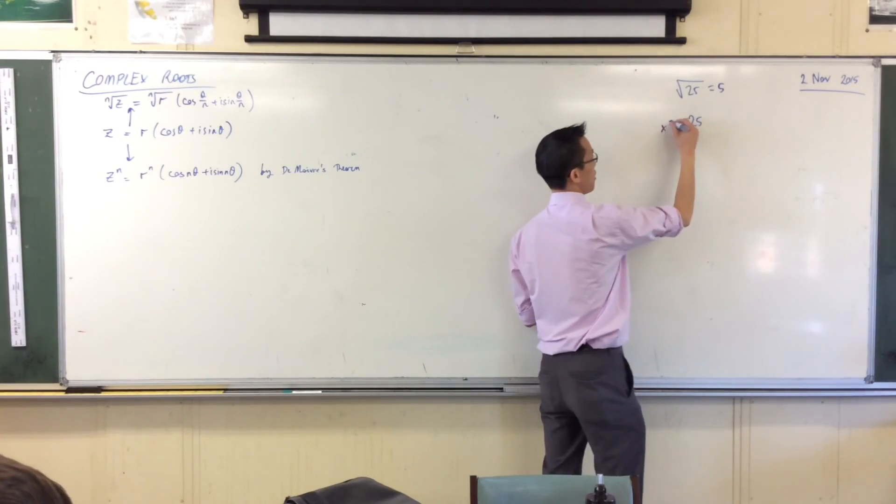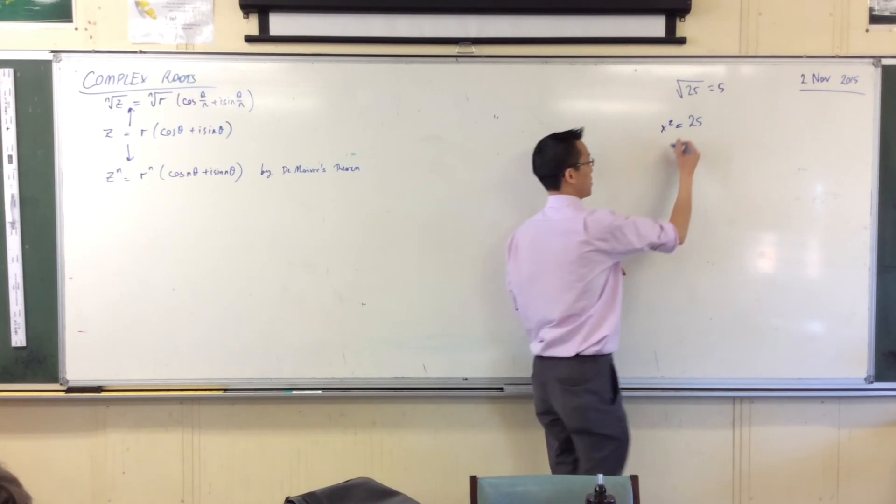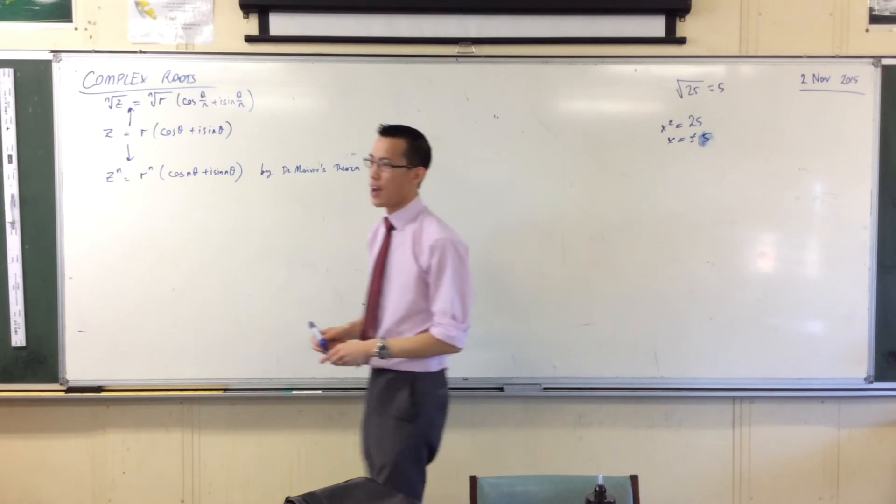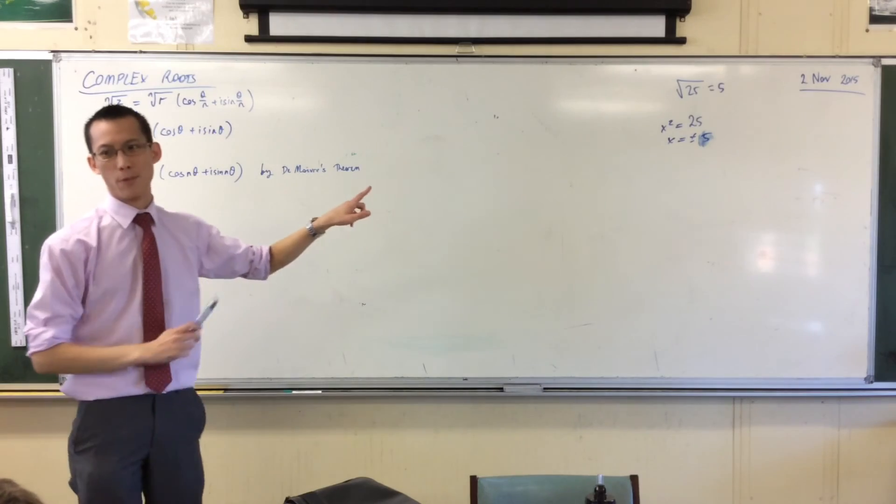Of course, the equation that would give you those two solutions is x squared equals 25. We know this has two answers. So plus or minus five are both square roots of 25. But five is the square root.